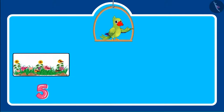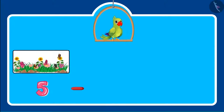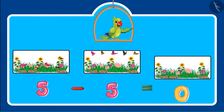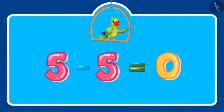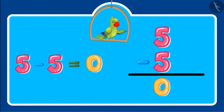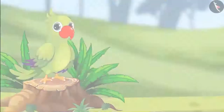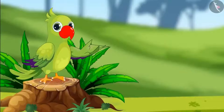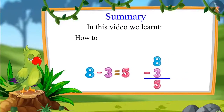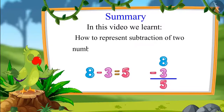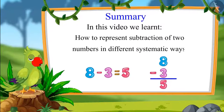Very good. So children, did you see that if we subtract five from five, then zero is left? Come on, let us write this also in a systematic way. That was all for today. In this video, we learned how to represent the subtraction of two numbers in different systematic ways.